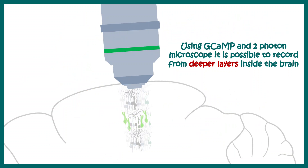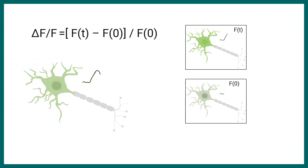Another advantage of GCaMP is we can utilize this approach combined with two-photon microscopy to image neurons located at deeper locations in the brain. Using conventional patch clamp technique it may not be easy to access those deeper neurons, but light can access them easily, so fluorescence from deeper layers can be recorded using a two-photon microscope.